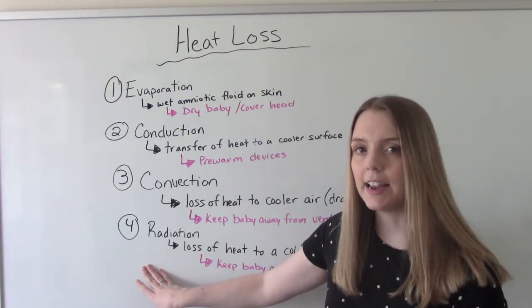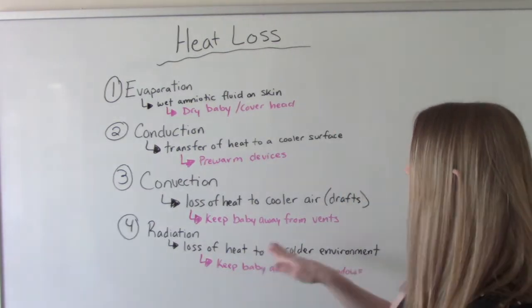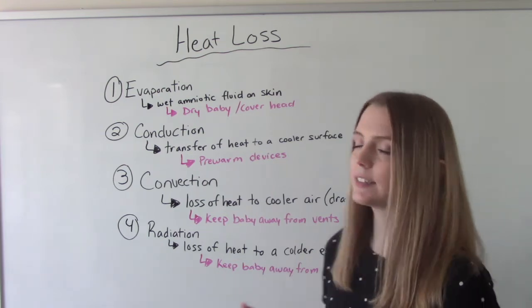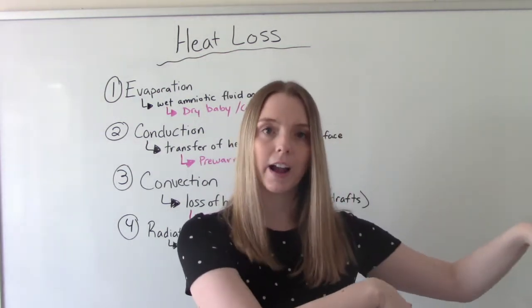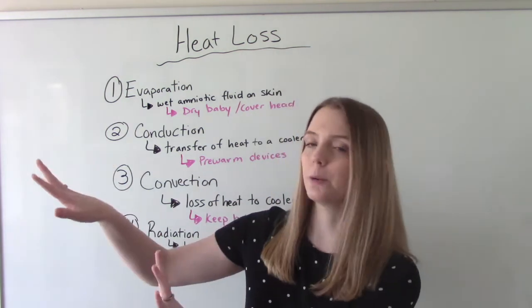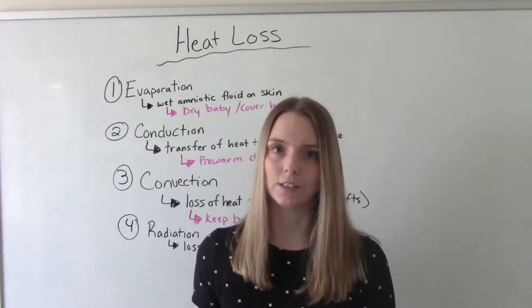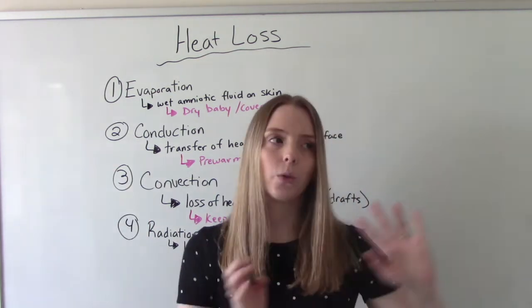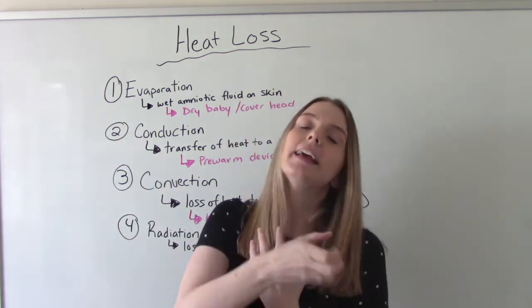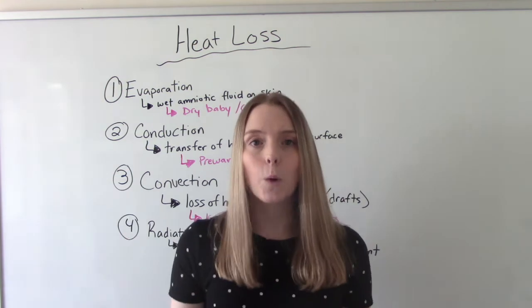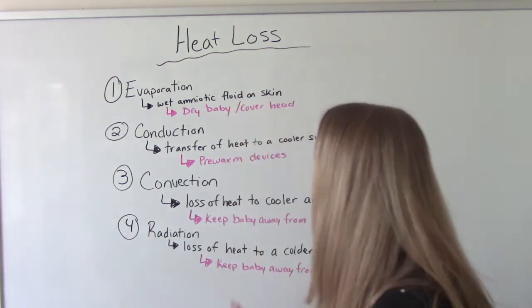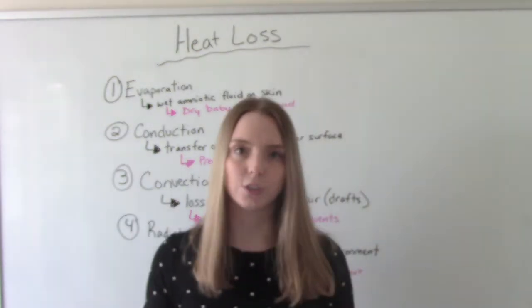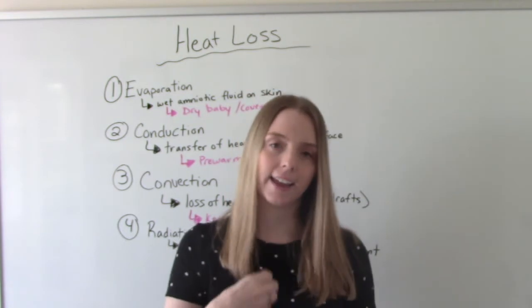The fourth kind of heat loss is radiation. This is loss of heat to a colder environment. For example, let's say you're in class and you're sitting by the wall and your classmate is sitting by the window and it's wintertime, really cold outside. The classmate by the window is going to be much colder than you, the one by the wall, because the colder window environment is taking the heat from them. So what can we do, especially when it comes to babies? Keep them away from windows or obvious colder surfaces and colder environments, because it's going to take the heat off of them.